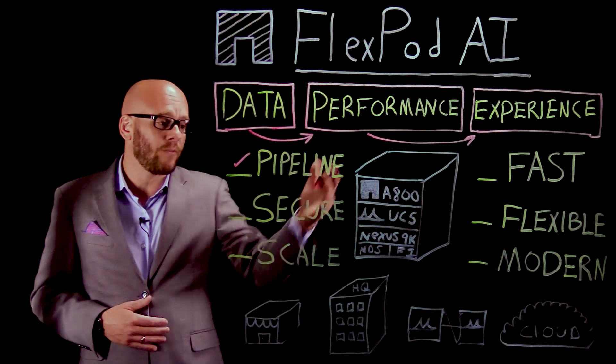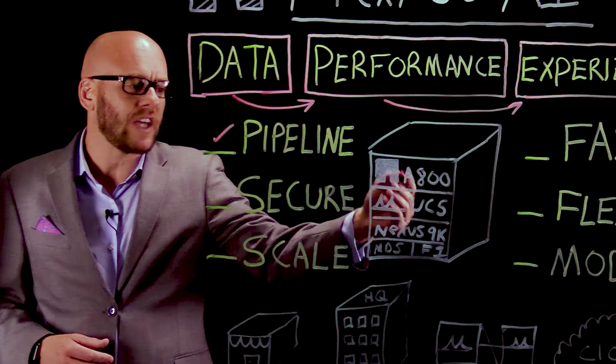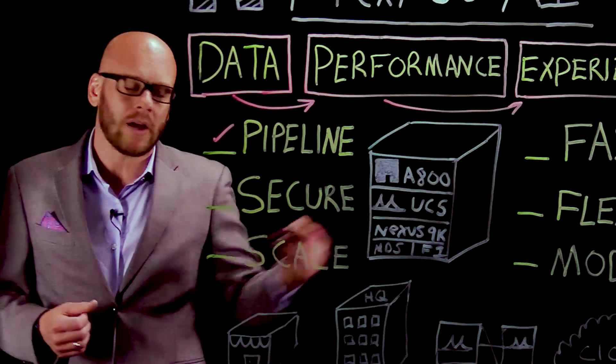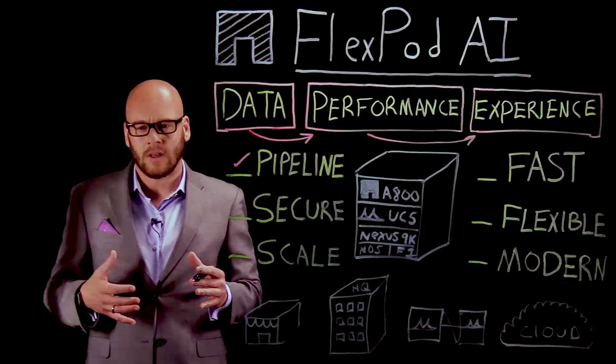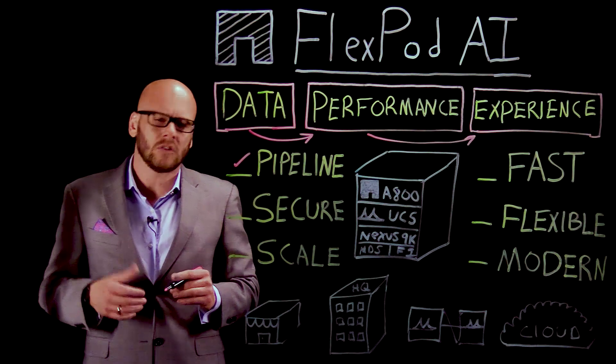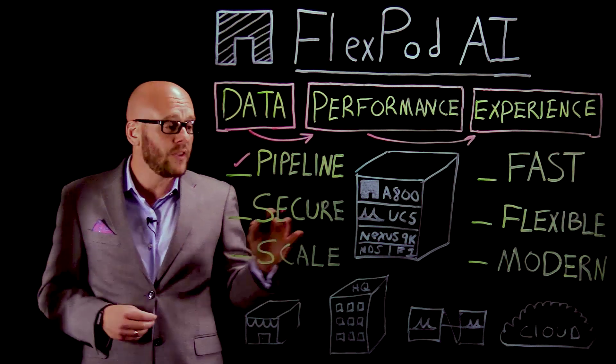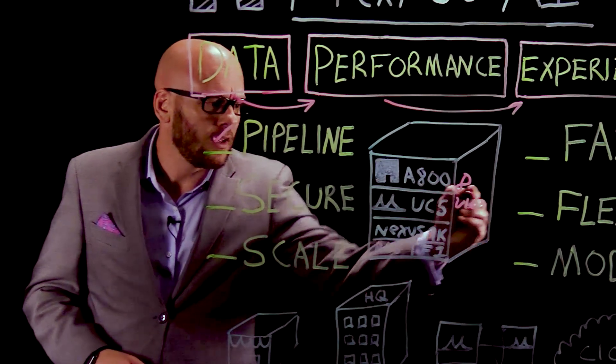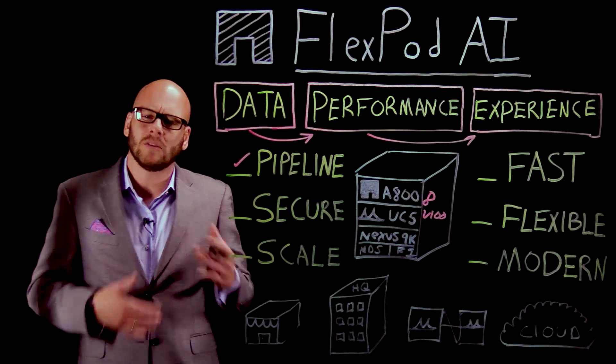This solution called FlexPod AI as we're talking about today is based upon all Flash 800 NetApp storage solutions, the Cisco UCS M5 servers, as well as the Nexus 9k data center switches. This is the world's first end-to-end NVMe solution using Cisco MDS and fabric interconnects. This solution will come with eight NVIDIA V100 Tesla cards.